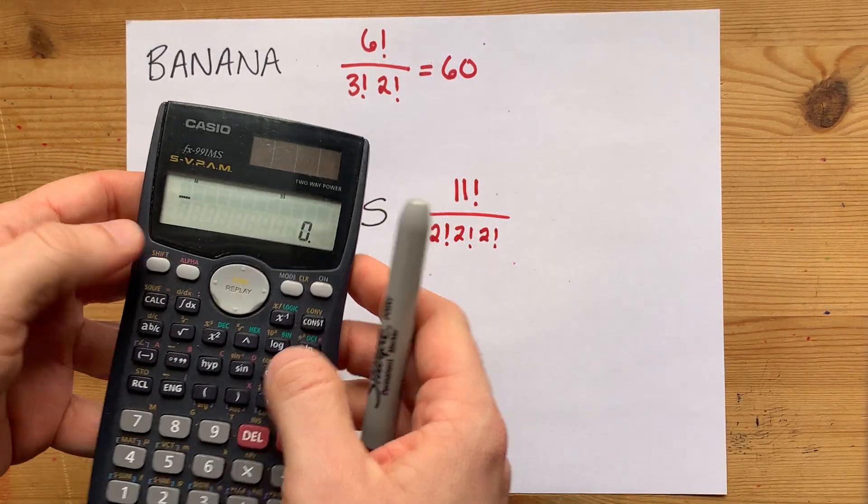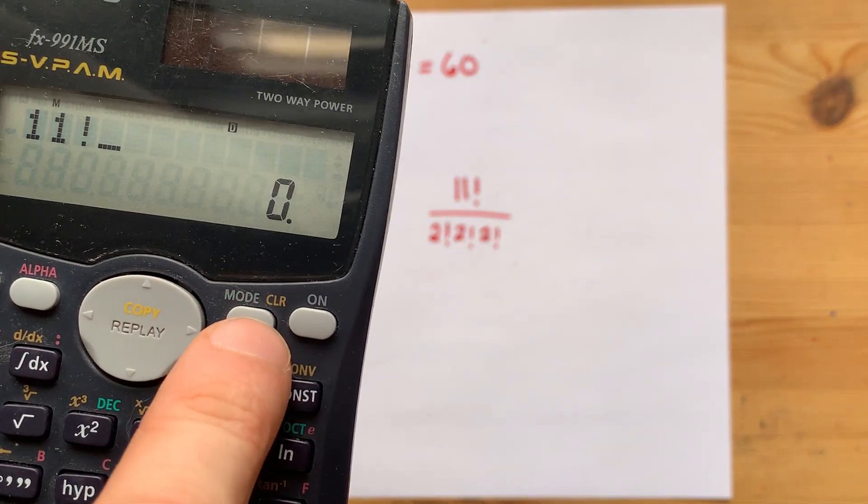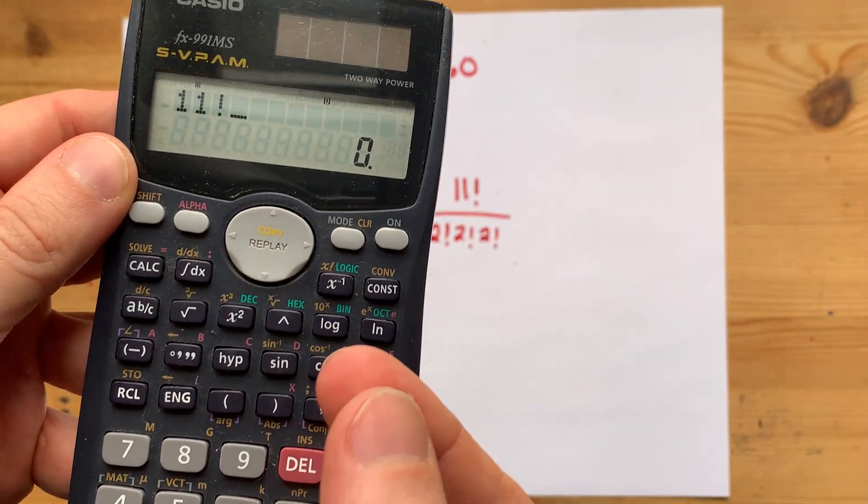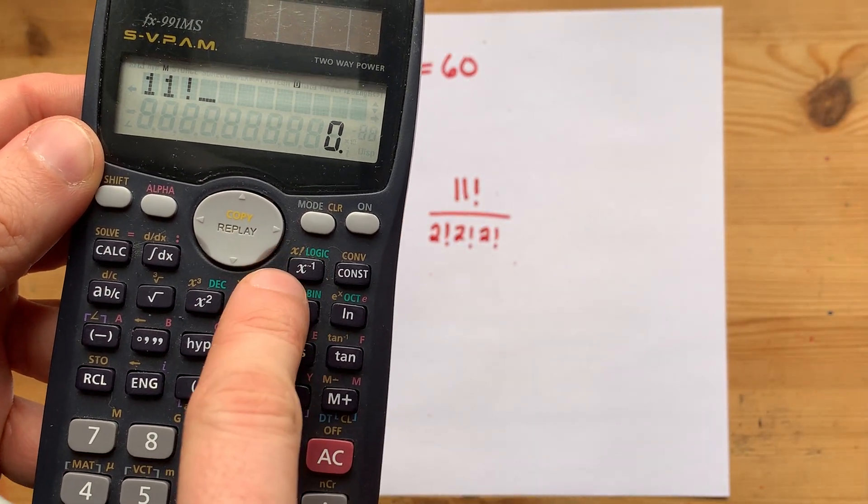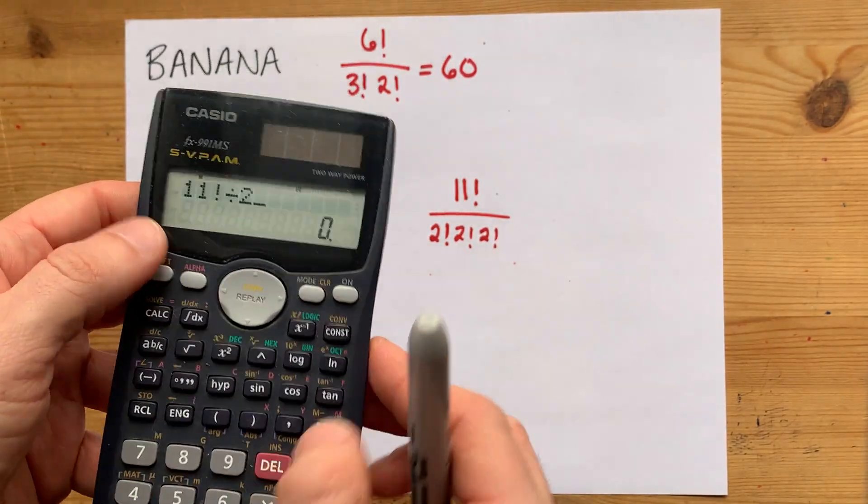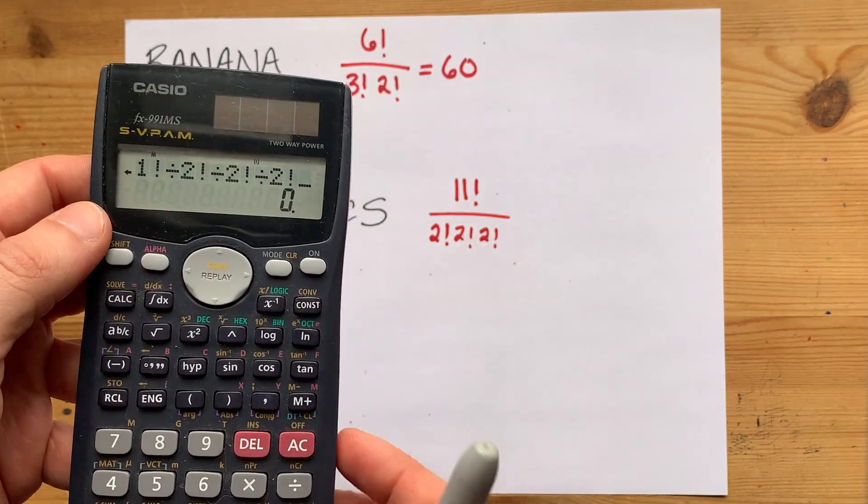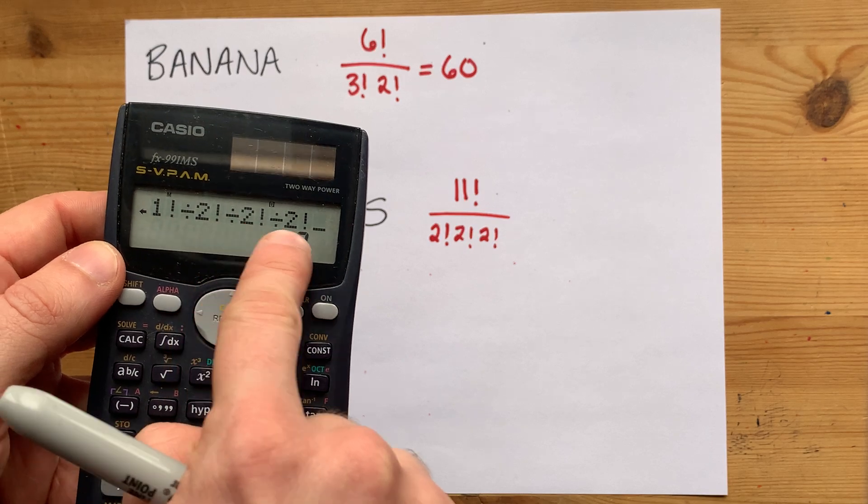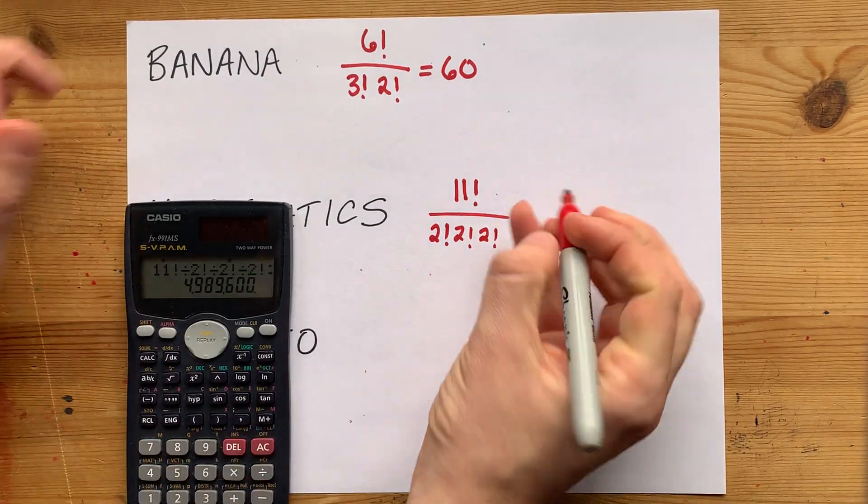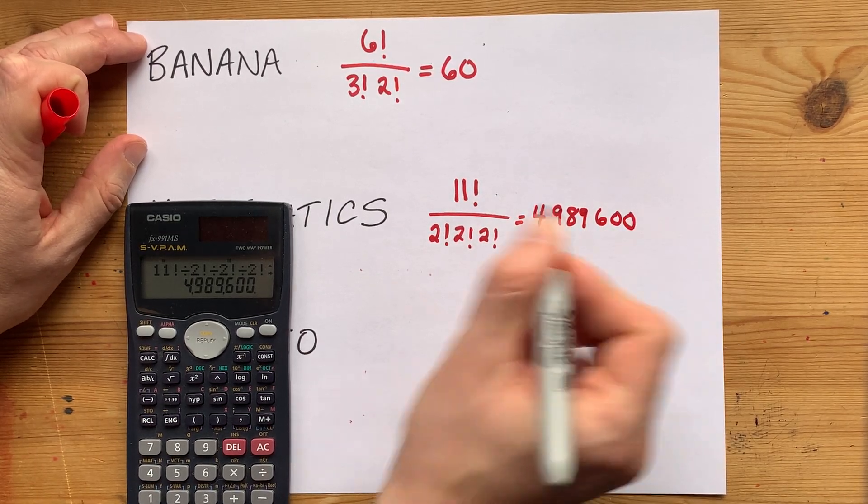We just have to do eleven factorial. On my calculator here, I have a factorial button, this exclamation mark. Surely you do as well. It's probably N factorial or X factorial, like mine, divided by two factorial. Three times, we're dividing by two factorial: M's, A's, and T's. That's still a large number. I got four million, nine hundred and eighty-nine thousand six hundred.